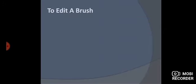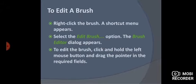Next, we have the topic of how to edit a brush. Right-click the brush and a shortcut menu appears. We will go to the brush and right-click to open the shortcut menu. Select the edit brush option. The brush editor dialog box will appear. To edit the brush, click and hold the left mouse button and drag the pointer in the required fields.